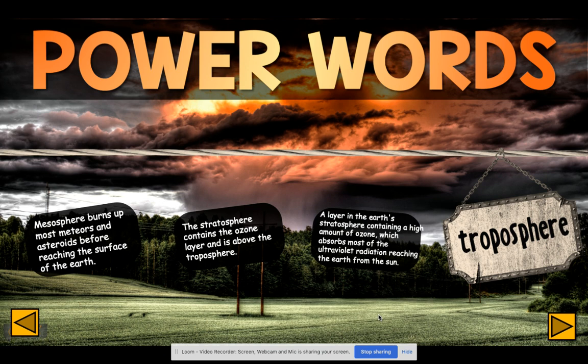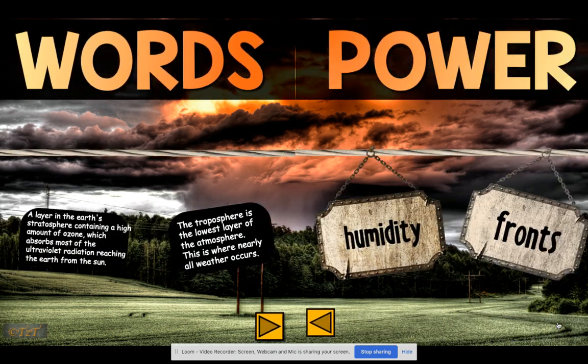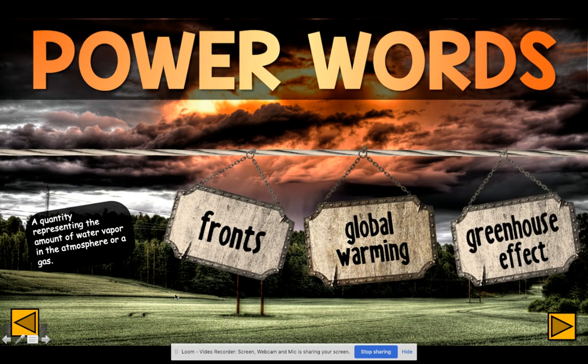We have our ozone layer, which is a layer in earth's stratosphere containing a high amount of ozone that absorbs most of the ultraviolet radiation reaching the earth from the sun. Then we have our troposphere, which is the lowest layer of the atmosphere and this is where most of our weather is actually going to take place and occur.